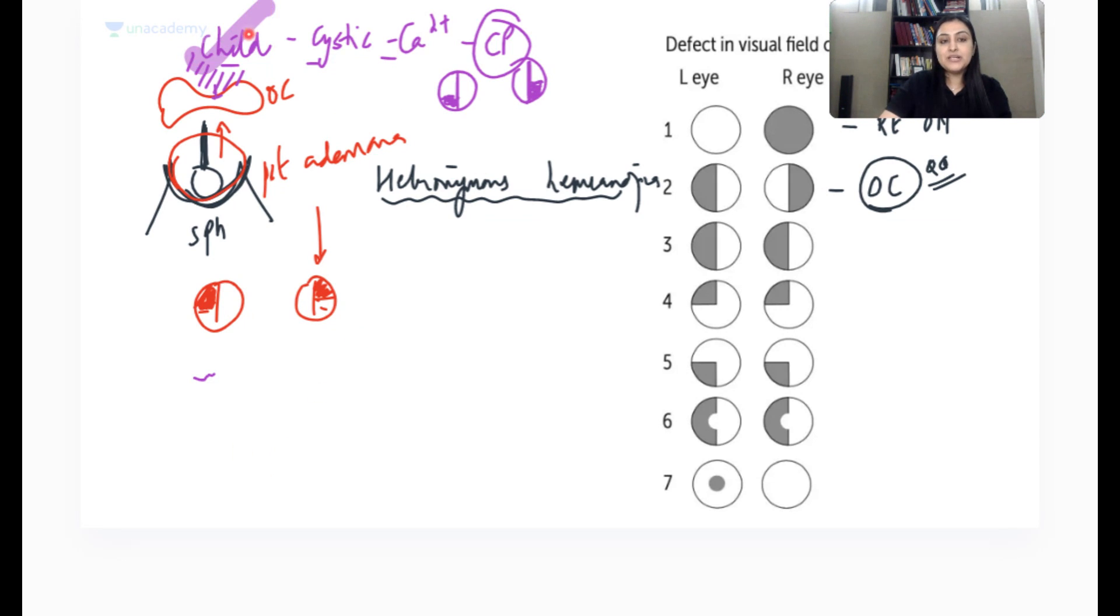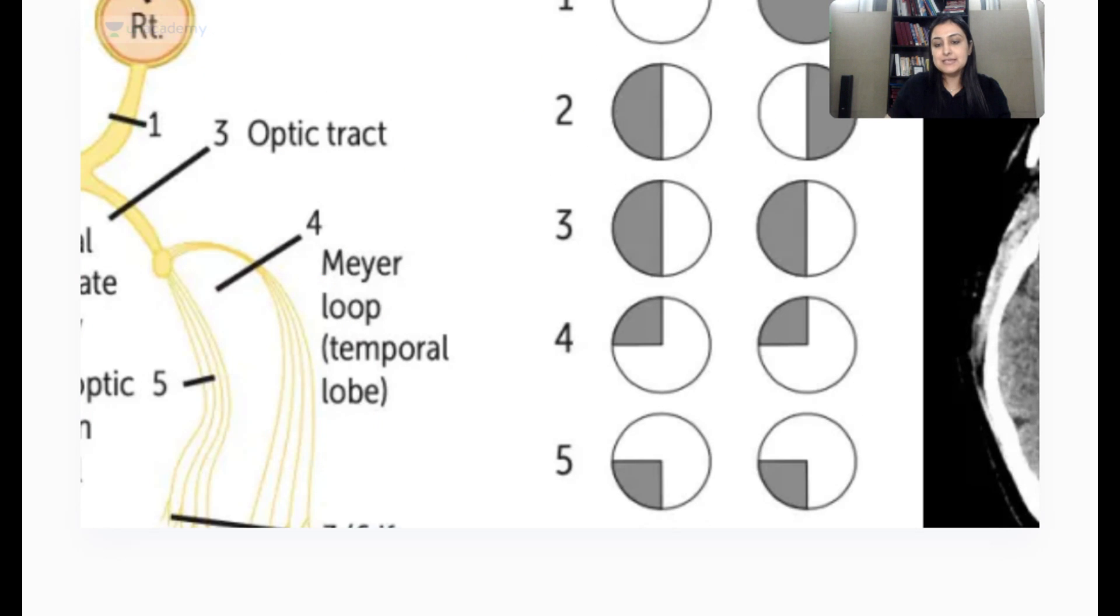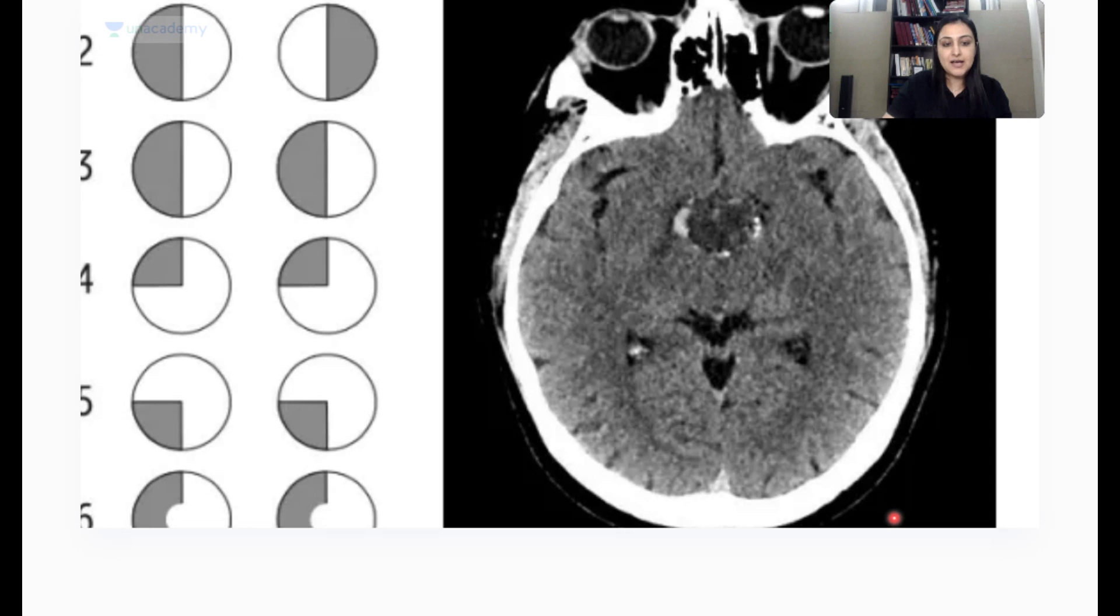It is not pie on the floor. This is not what is called pie on the floor because this is not homonymous. This is heteronymous. Thik hai? Toh yahan pe kya milega? Bitemporal hemianopia, yes. But because upar se dab raha hai, mujhe milega neeche ka defect. Did you guys understand? Yeah, three C's, it's a tumor in children, cystic tumor with calcification. Aapko dikhenge CT se jo dikhega aisa.